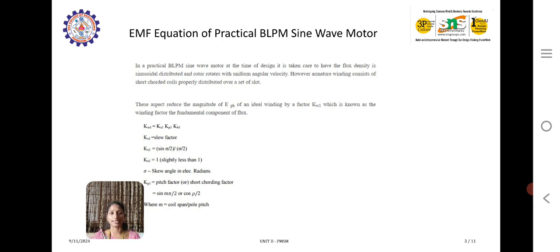As we have already discussed, in order to derive any EMF equation, we will be considering the electromagnetic induction law which tells that E equals minus N d phi by dt. From there we have already derived the EMF equation like 4.44 F I M t phase. This was the EMF equation of permanent magnet asynchronous motor.